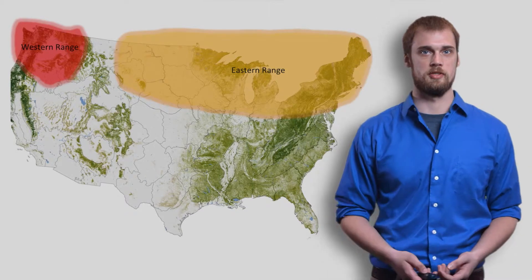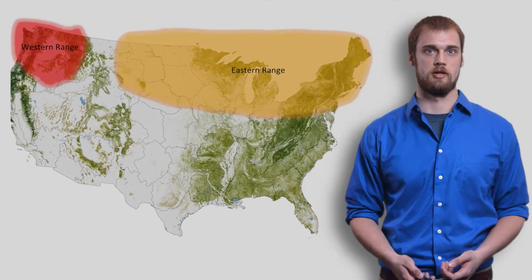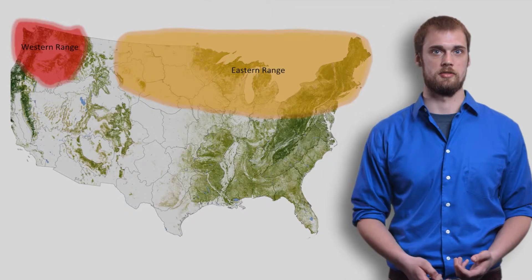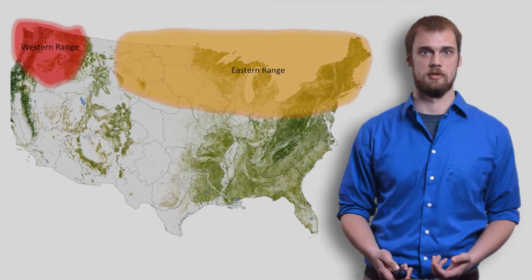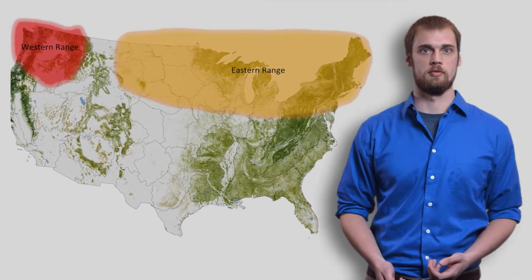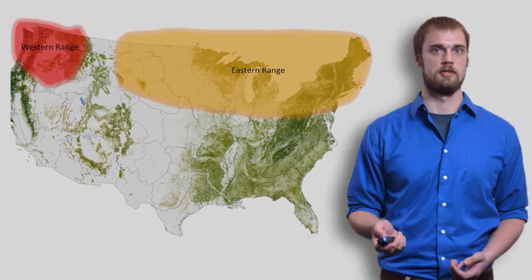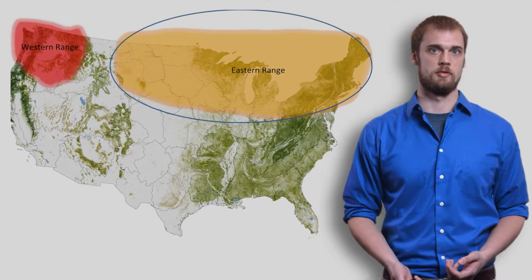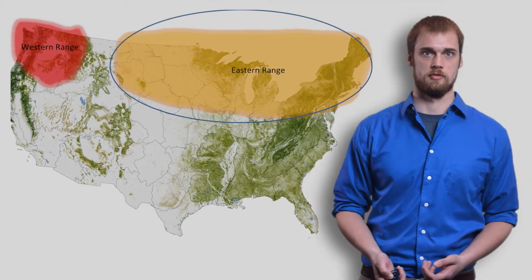The Western population is much smaller and undergoes a more truncated migration compared to the Eastern population. Therefore, we will be concentrating on the Eastern population for the majority of this module.